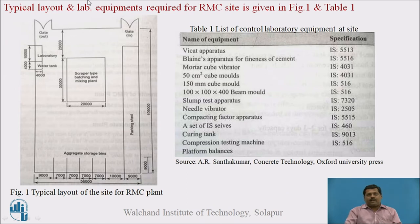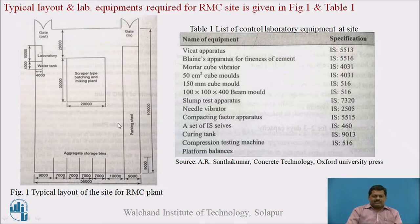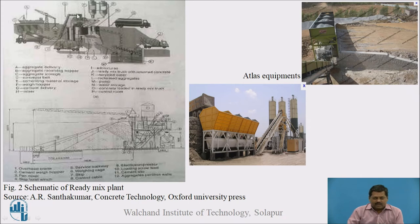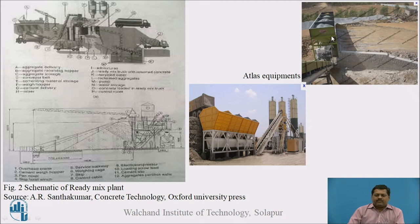Now let us see the typical layout and lab equipment required for the RMC site, shown in Figure 1. The equipment required at the site laboratory is shown in Table 1. One more diagram shows the schematic of the ready-mix plant with different components: aggregate stacking, cement silos, pan mixer, and weigh batchers where aggregates are mixed in the pan mixer. Finally the concrete is poured into the truck and transported to the site. These two batching plants and the RMC unit are shown for reference.